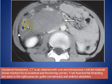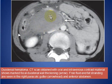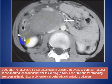Here we have a patient with duodenal hematoma. The CT scan is obtained after oral and IV contrast, and we see marked thickening of the duodenal wall with some free fluid and stranding.